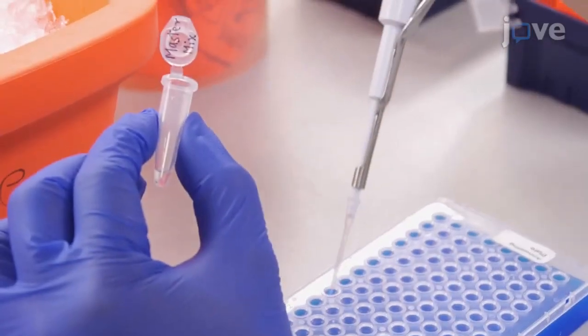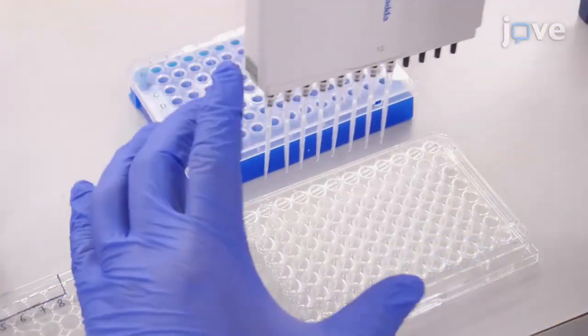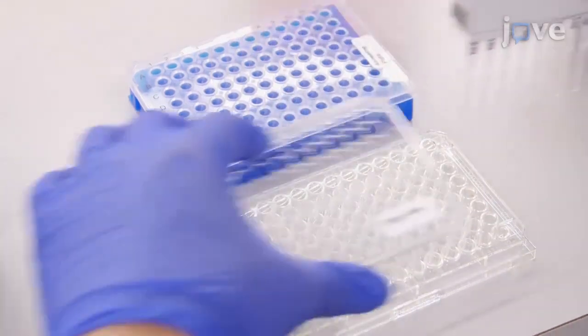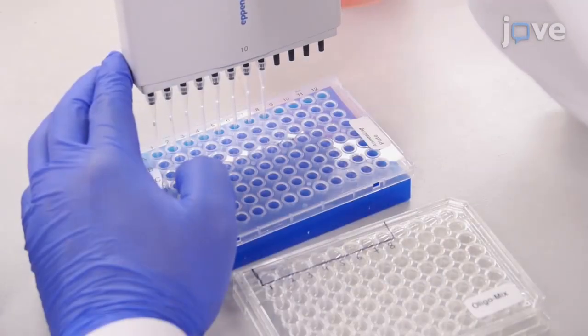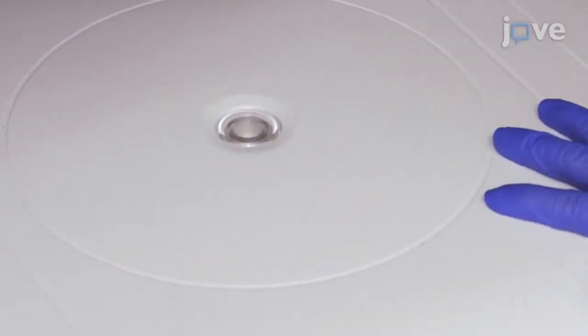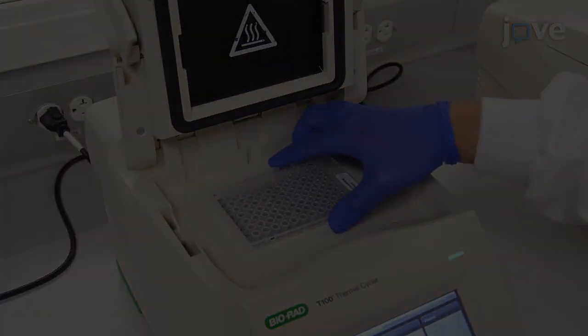Add 8 µL of the master mix to each well of the annealing plate, followed by 2 µL of premixed sense and antisense oligonucleotides. Pipet 2-3 times gently to mix well, and then spin the plate briefly to get the mixes to the bottom of the wells. Use the following annealing program in a PCR machine.